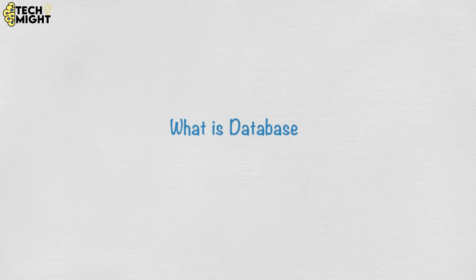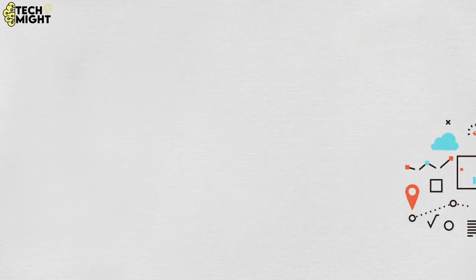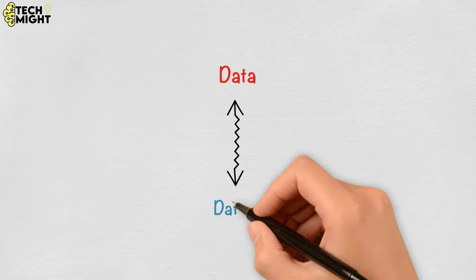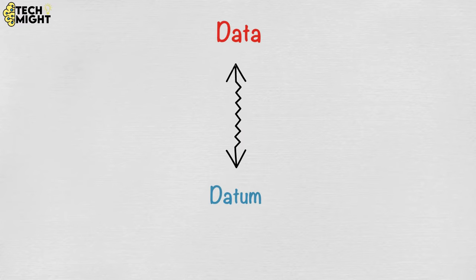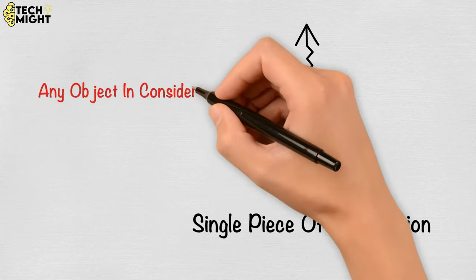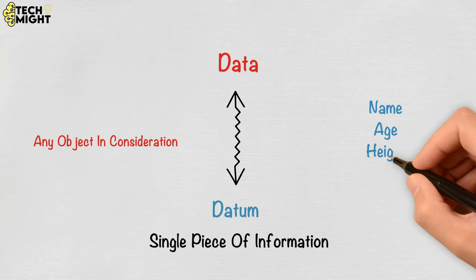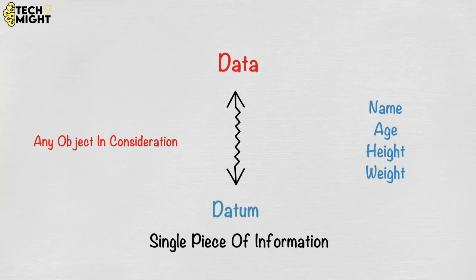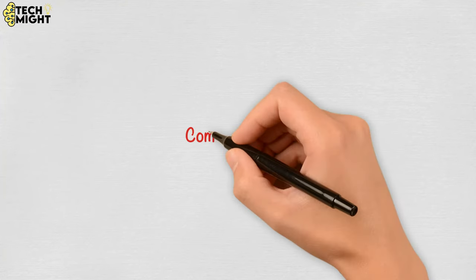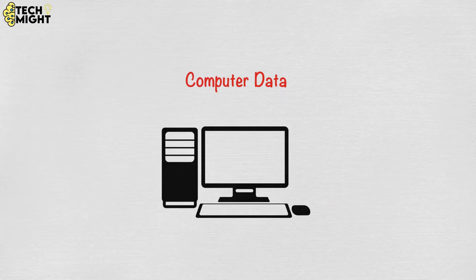Before moving on to what is a database, I would like to tell you a little bit about data. So what is data? The word data is originated from the word 'datum', which means a single piece of information — it is the plural of the word datum. In simple words, data can be facts related to any object in consideration. For example, your name, age, height, weight, etc. are some data related to you.